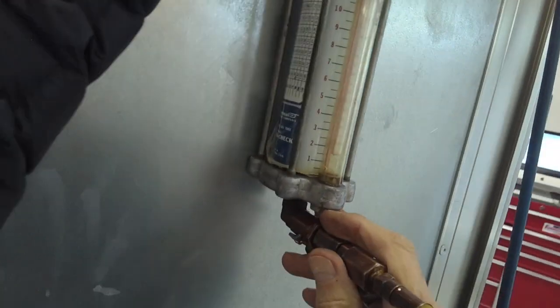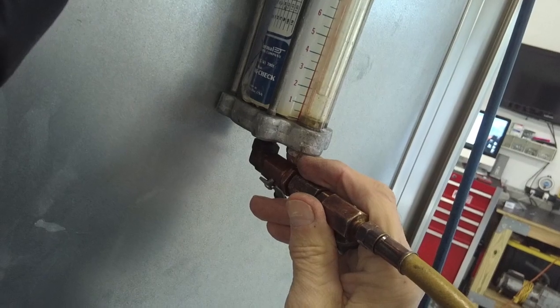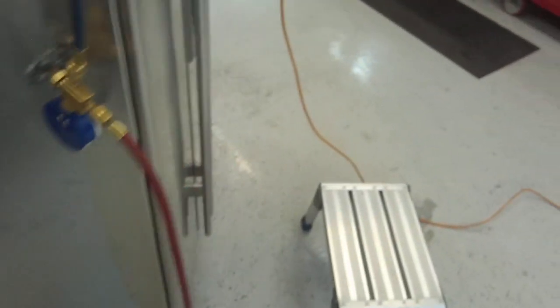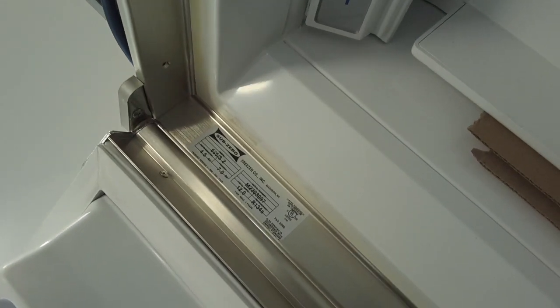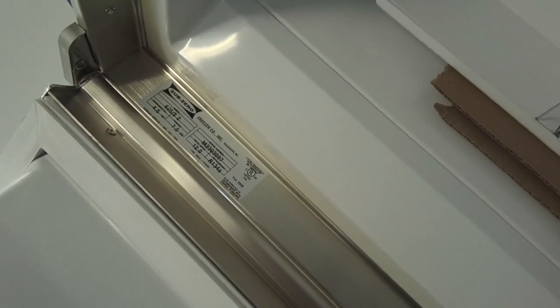We pulled out, it looks like 2 ounces of gas. 2 ounces of gas is low. Let's see what this thing takes. The refrigerator takes 7 ounces of freon 134A. So it's low, that's for sure. Alright, so let's work on the dryer.